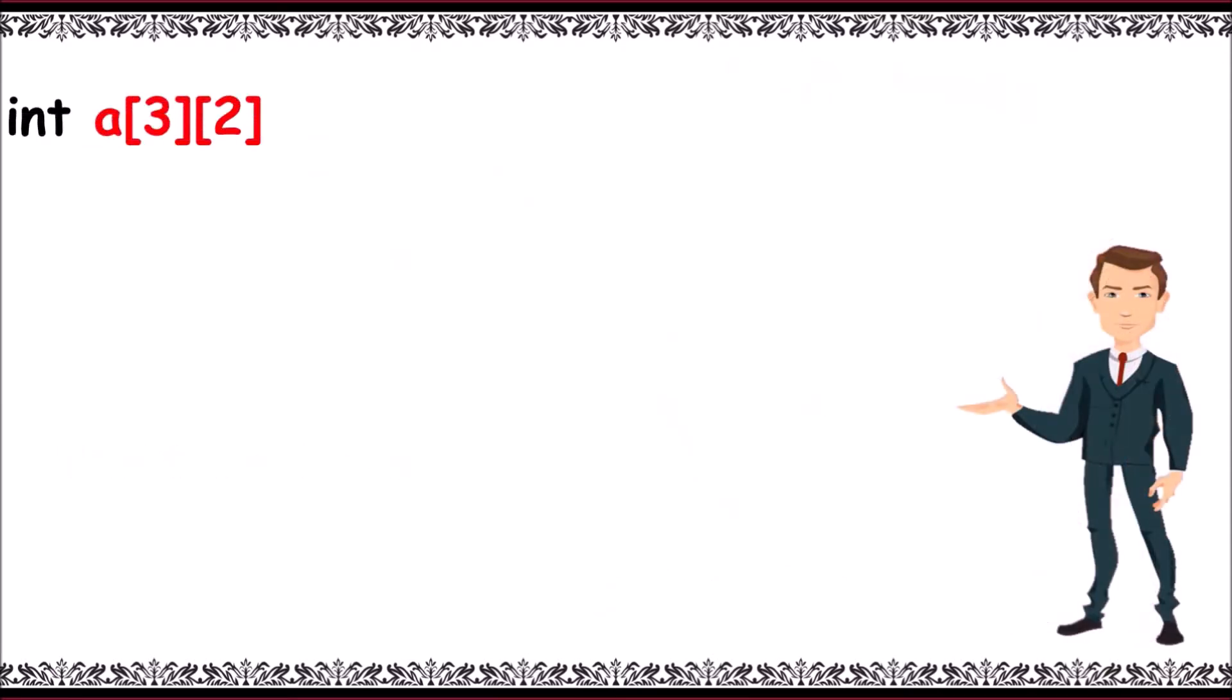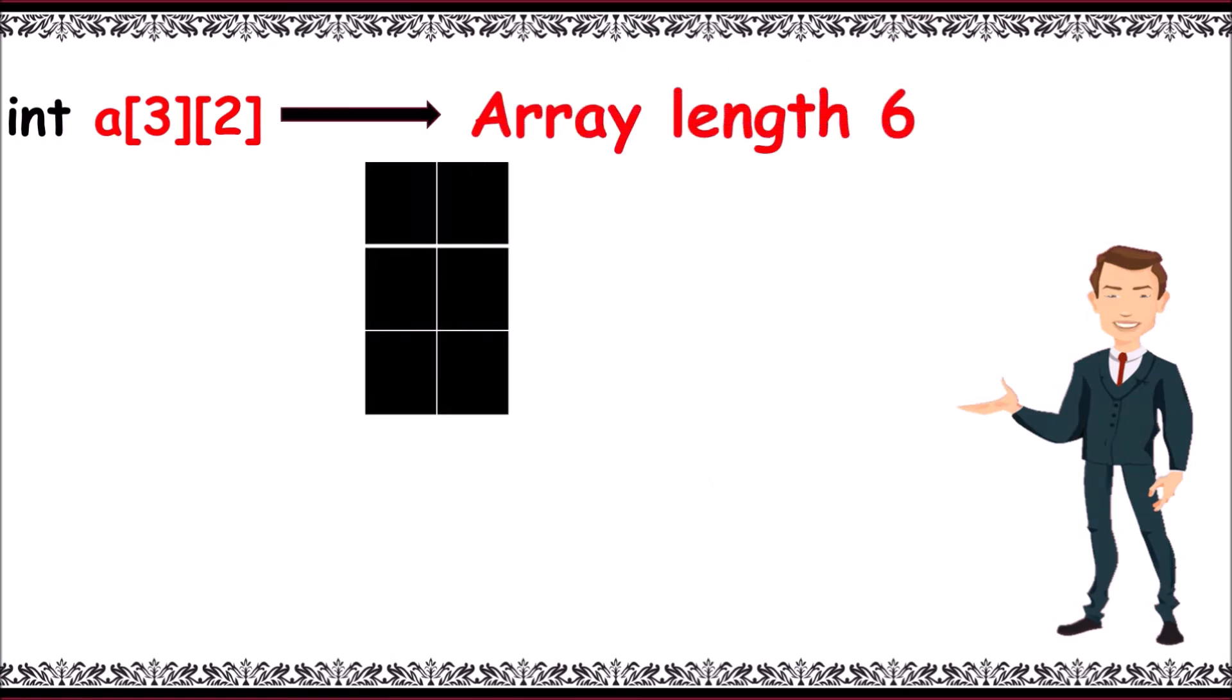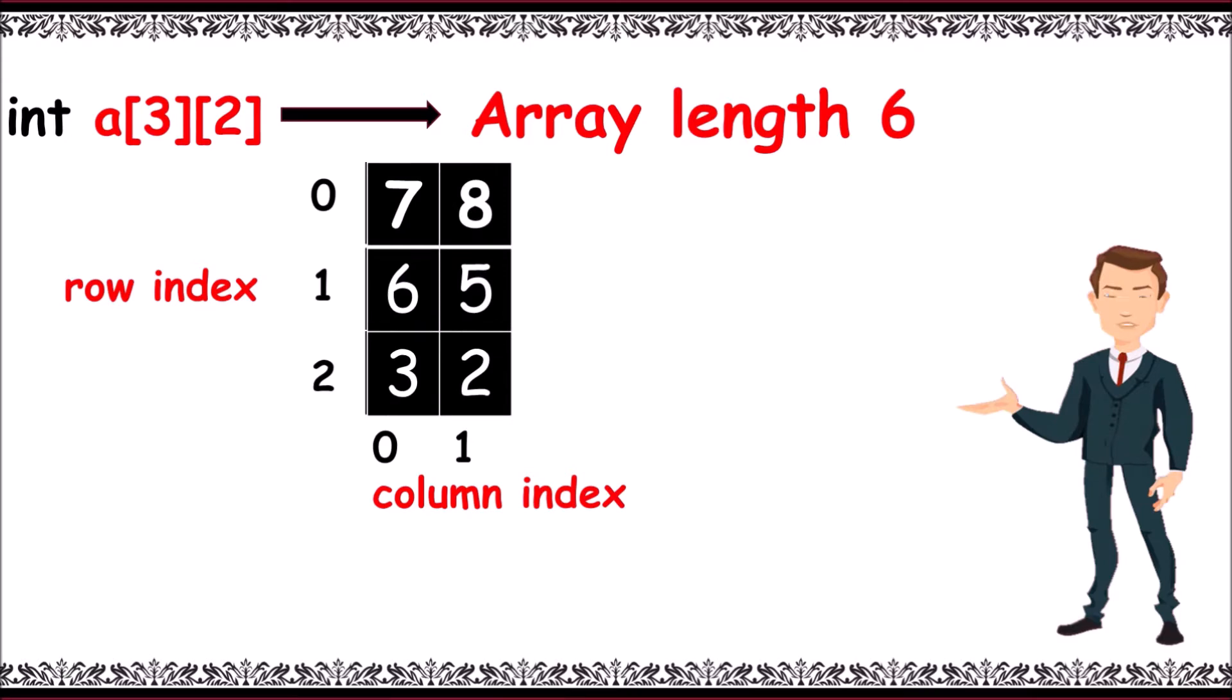Now, int a[3][2] indicates array length of 6 with 2D array elements. Now, row index be like 0, 1, 2 and column index be like 0, 1. The sample values 7, 8, 6, 5, 3, 2 are given here.